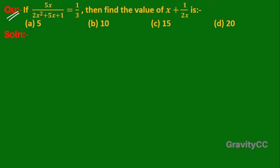Question: if 5x upon (2x squared plus 5x plus 1) is equal to 1 upon 3, then find the value of x plus 1 upon 2x. So here it is given that 5x upon (2x squared plus 5x plus 1) equals 1 upon 3.